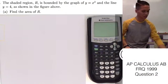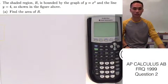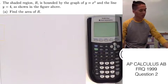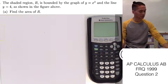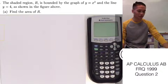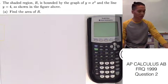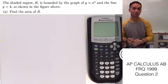Let's go ahead and answer the second question from the 1999 AP Calculus FRQ. The question says the shaded region R is bounded by the graph of y equals x squared and the line y equals 4, as shown in the figure above.